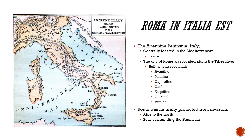The city of Rome is located nestled among seven different hills — the Seven Hills of Rome. The big ones are Aventine, Palatine, and Capitoline Hill, and then you have Caelian, Esquiline, Quirinal, and Viminal.